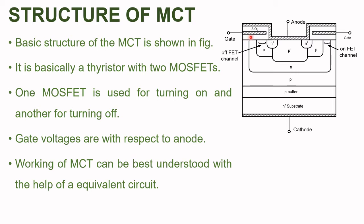SiO₂, that is silicon dioxide, is used here as an insulator. One of these FET channels is used for turning off operation and another FET channel is used for turning on operation. Unlike all the other devices of the thyristor family, the gate voltages are applied with respect to the anode terminal.